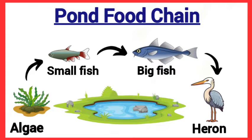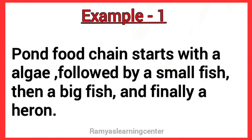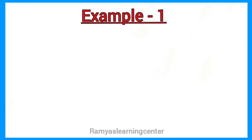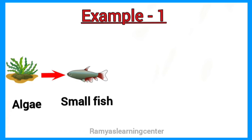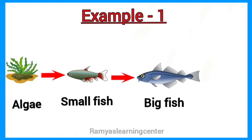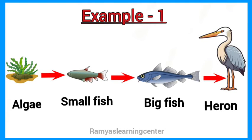Pond food chain. Example 1. Pond food chain starts with algae, followed by a small fish, then a big fish, and finally a heron. It can be shown like this: algae is eaten by small fish, small fish is eaten by big fish, and big fish is eaten by heron.